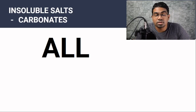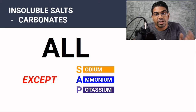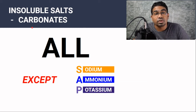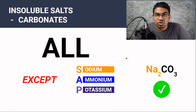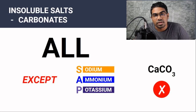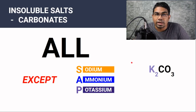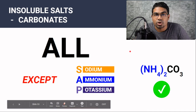For carbonate salts, all carbonates are insoluble, except if they are paired with cations from SNAP. If you remember soluble salts, all SNAP salts are soluble. From SNAP, the only cations are SAP — nitrate is an anion, and an anion doesn't form a salt with an anion, so carbonate will not form a salt with nitrate. That's why we ignore the N out of SNAP. Sodium carbonate: sodium is part of SNAP and therefore it will definitely be soluble. Calcium carbonate: calcium is not part of SNAP and therefore it will be insoluble. Potassium carbonate: potassium is part of SNAP and therefore it is soluble. Same goes for ammonium carbonate — ammonium is part of SNAP and therefore it is soluble.